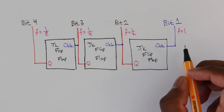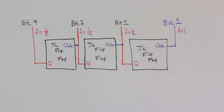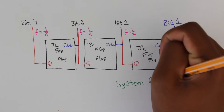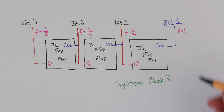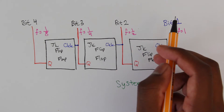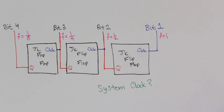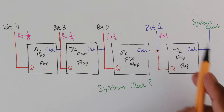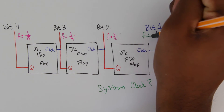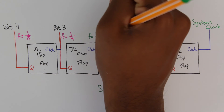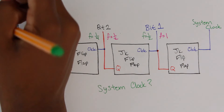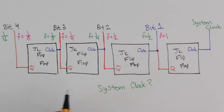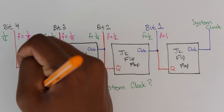Now we need to define bit one's frequency relative to our system clock. We'll make bit one equal to one-half of the system clock by placing another JK flip-flop before it, whose clock input is the system clock and whose output Q is bit one. This redefines all frequencies: bit one is one-half, bit two one-fourth, bit three one-eighth, bit four one-sixteenth. J and K inputs on every flip-flop are connected high.